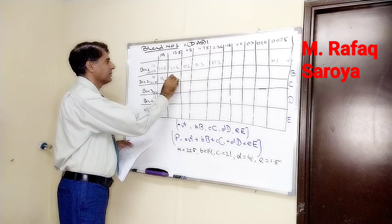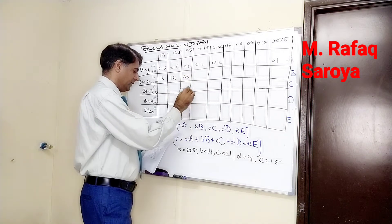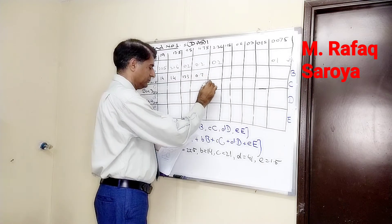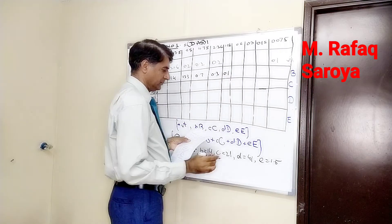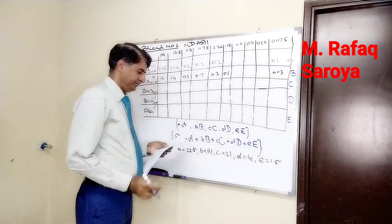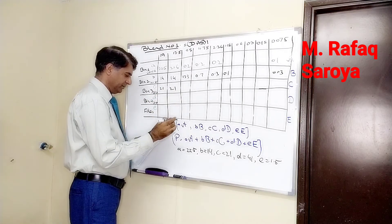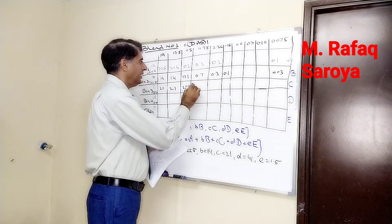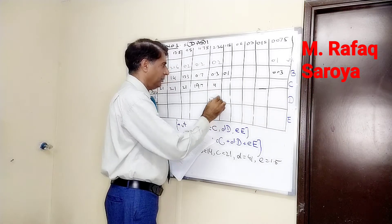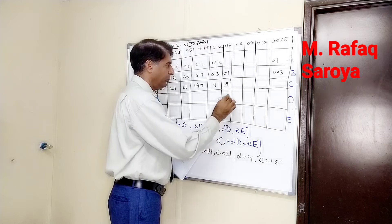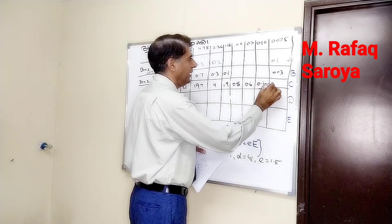14, 14, 13.3, 0.7, 0.3, 0.1, 0.3, 0.03. Then 21, 21, 21, 19.7, 4, 1.9, 0.8, 0.6, 0.4, and 0.2.